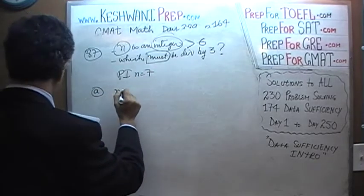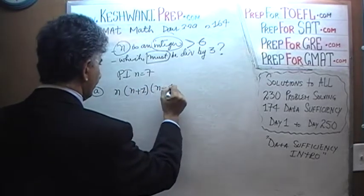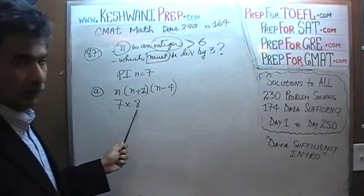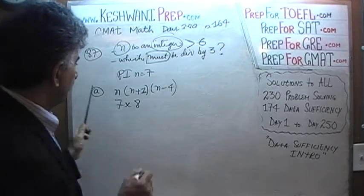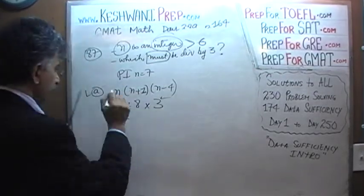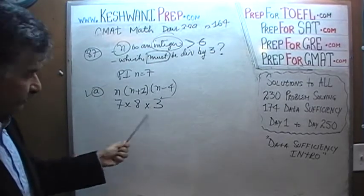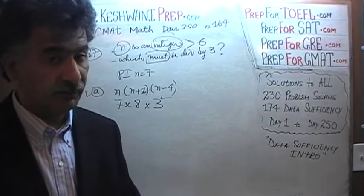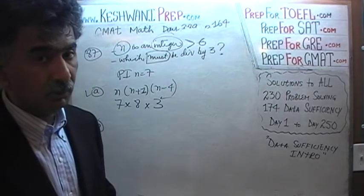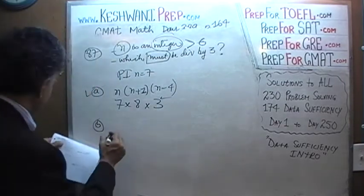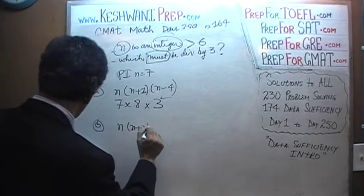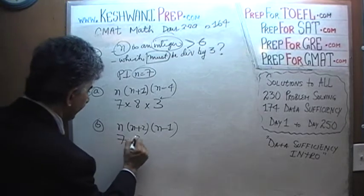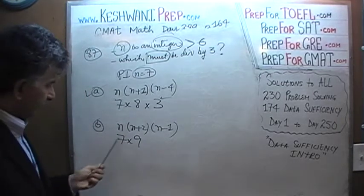Answer choice B: n times (n+2) times (n-1) gives 7 times 9 times 6. Since 9 is divisible by 3, this works with n=7. Answer choice C: n times (n+3) times (n-5) gives 7 times 10 times 2. Neither 7, 10, nor 2 is divisible by 3, so C is eliminated. Answer choice D: 7 times 11 times 5 — none are multiples of 3, so D is also eliminated.